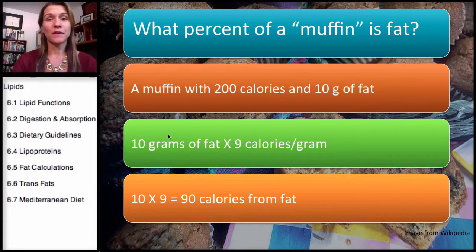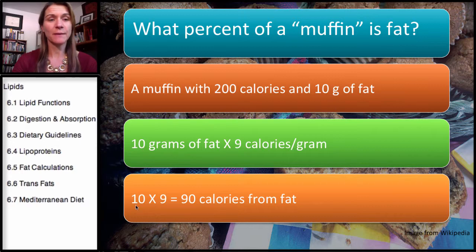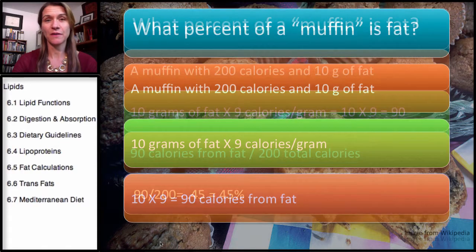Let's go back and remember that for every gram of fat there's going to be 9 calories. So if this muffin has 10 grams of fat, we're going to multiply it by 9 calories per gram. That means 10 times 9 is 90 calories. So 90 calories come from fat — there are 10 grams of fat and that equals 90 calories of fat.